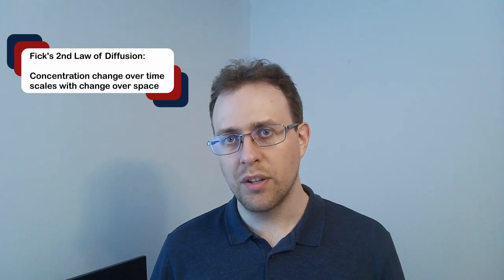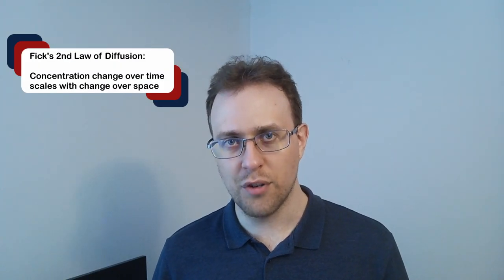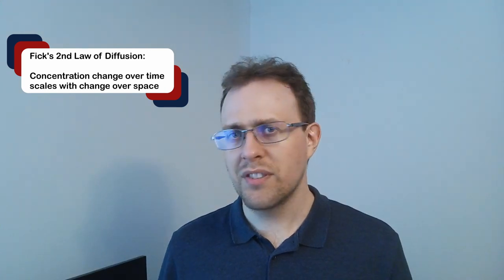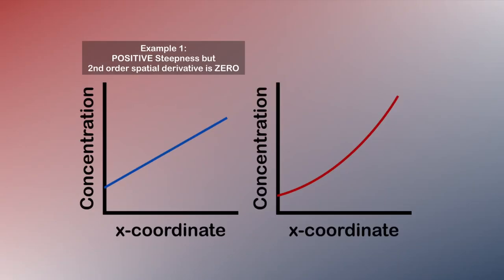It turns out that a molecule concentration's rate of change over time scales with its second derivative over space. But what's the second derivative over space? The first derivative was the steepness of the concentration over space. The second derivative measures how sharply that steepness changes.